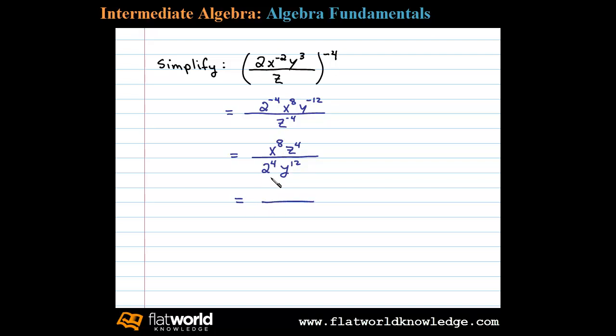2 to the fourth power is 16, so we'll write x to the eighth z to the fourth divided by 16 y to the 12th.